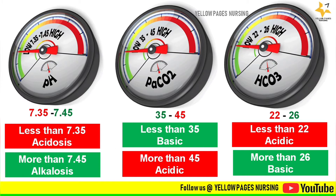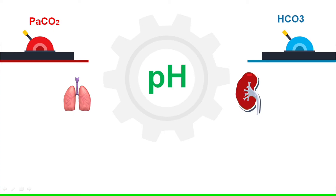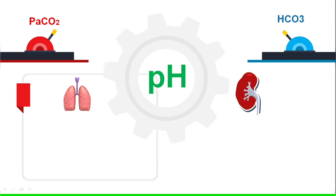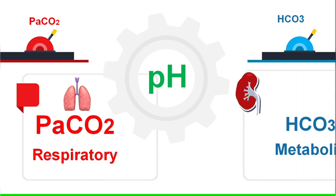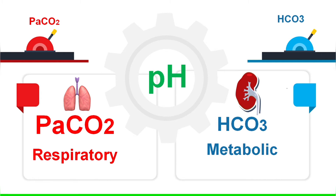When we receive an ABG result, by looking at the level of pH we decide if it is acidosis or alkalosis — below 7.35 is acidosis and above 7.45 is alkalosis. Next we decide if it is respiratory or metabolic. Near PaCO2 there is an image of a lung, indicating the lung controls PaCO2, and an image of a kidney alongside bicarbonate, indicating the kidney controls bicarbonate.